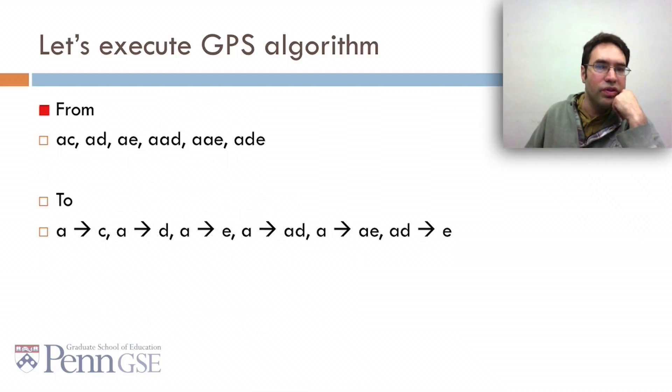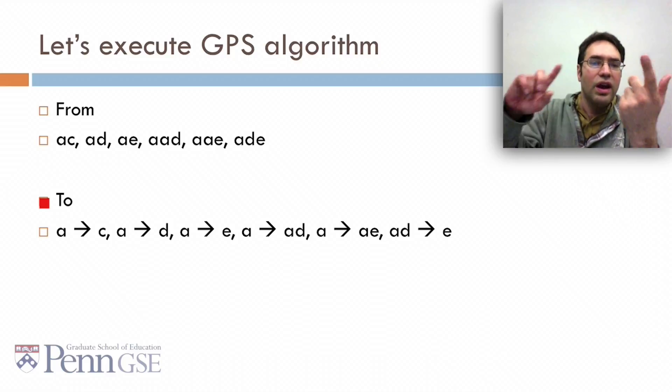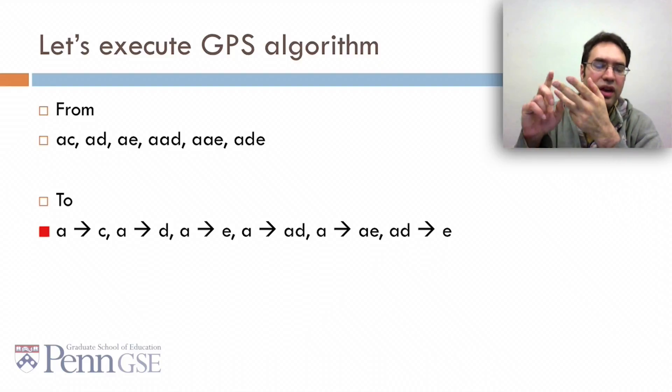We also have enough support for AAE and ADE. Now we can go from AC, AD, AE, AAD, AAE, and ADE to create sequences like A to C, A to D, A to E, A to AD, A to AE, and AD to A.